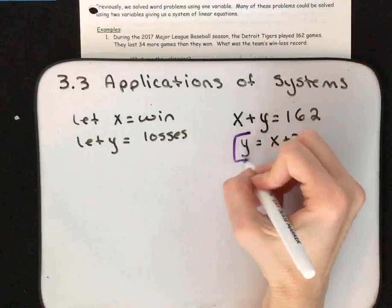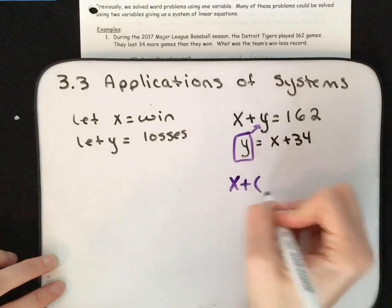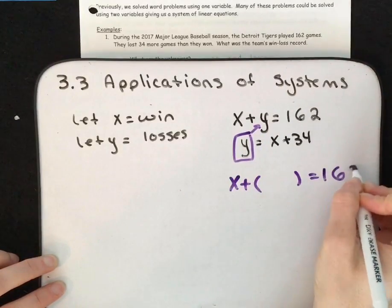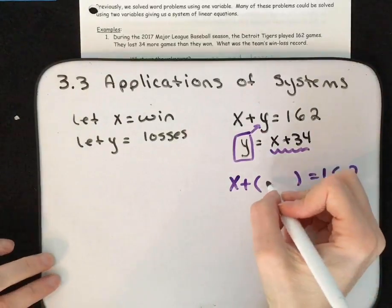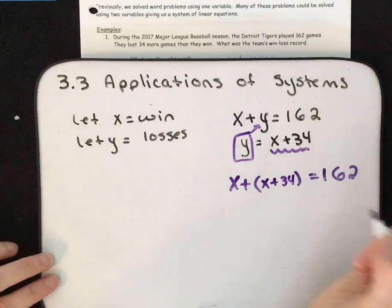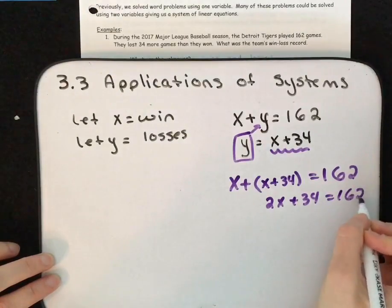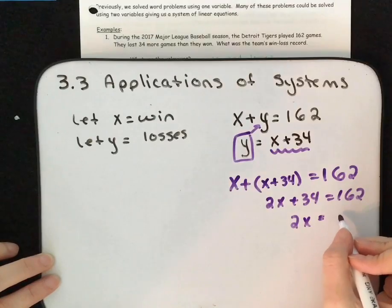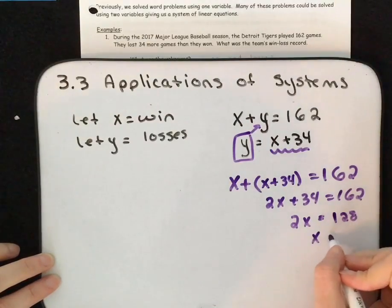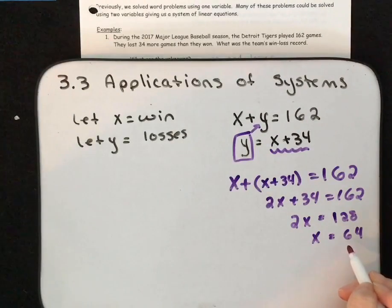We have Y equals X plus 34, so let's substitute that into the first equation. We replace Y with X plus 34, giving us X plus X plus 34 equals 162, which simplifies to 2X plus 34 equals 162. Subtract 34 from both sides, then divide both sides by 2, and we get X equals 64. So they won 64 games.